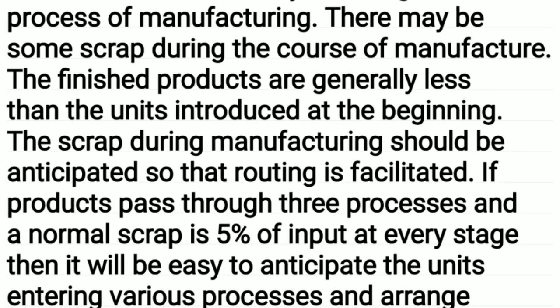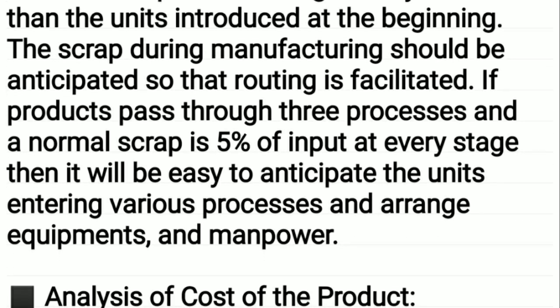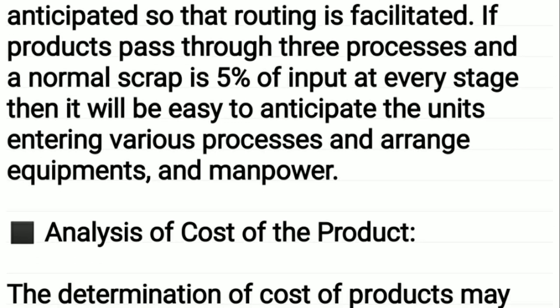During the course of manufacture, there may be some scrap. The finished products are generally less than the units introduced at the beginning. The scrap during manufacturing should be anticipated so that routing is facilitated. If products pass through three processes and normal scrap is five percent of input at every stage, it will be easy to anticipate the units entering various processes.